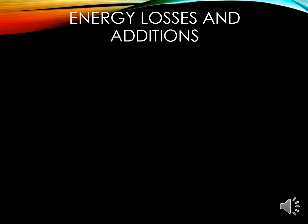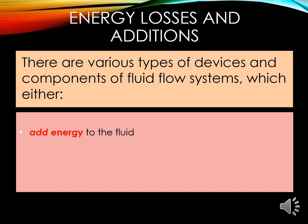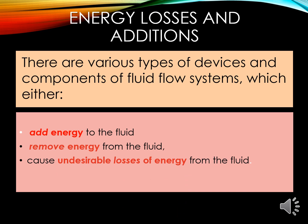Energy losses or energy addition commonly occur in a fluid flow system. There are various types of devices or conditions that may lead to energy losses or energy addition in a fluid flow system. For example, there might be equipment that can add energy to the fluid, equipment that can remove energy from the fluid, or conditions and devices that cause undesirable losses of energy. We will explain the categories that fall into these three different groups.